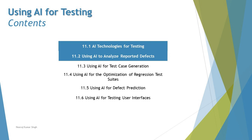In this particular chapter we will be covering 11.1 AI Technologies for Testing, 11.2 Using AI to Analyze Reported Defects, 11.3 Using AI for Test Case Generation, 11.4 Using AI for Optimization of Regression Test Suites, 11.5 Using AI for Defect Predictions, and 11.6 Using AI for Testing User Interfaces. Today we are getting started with 11.1 AI Technologies for Testing and 11.2 Using AI to Analyze Reported Defects.